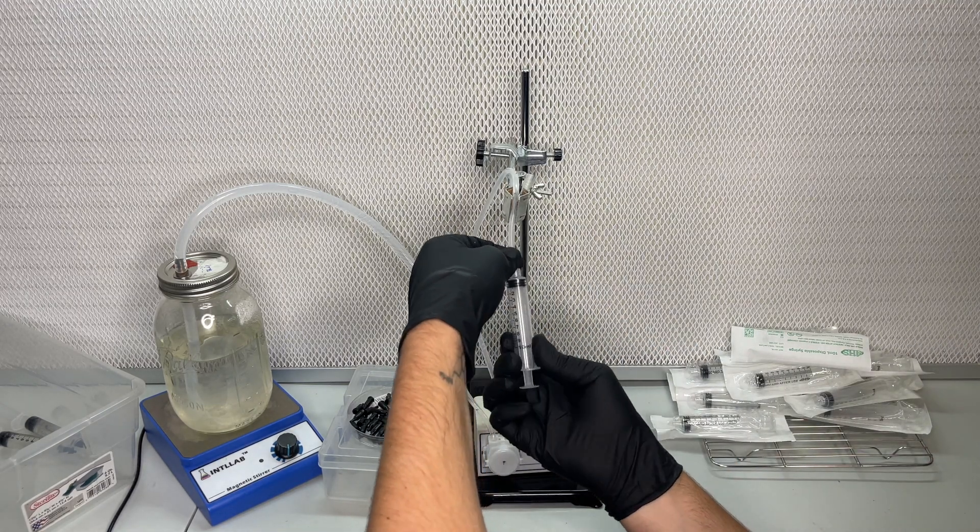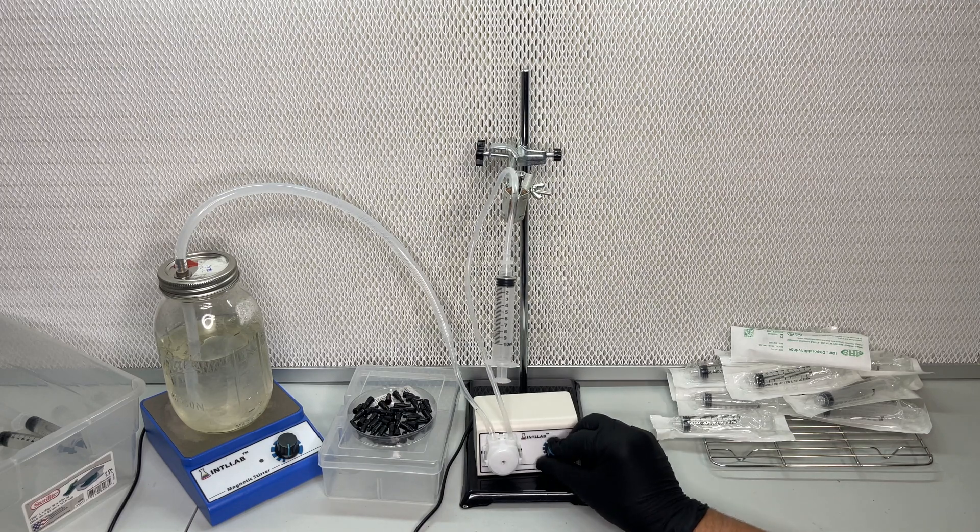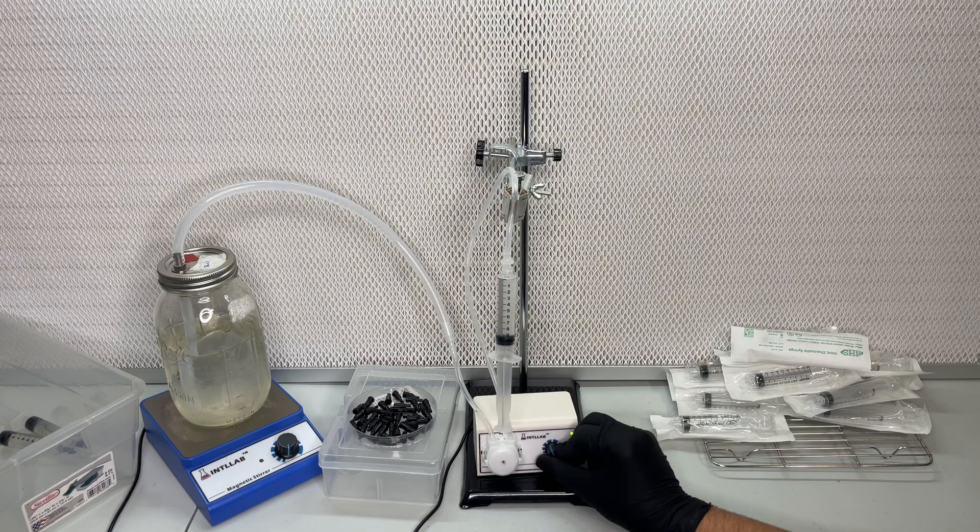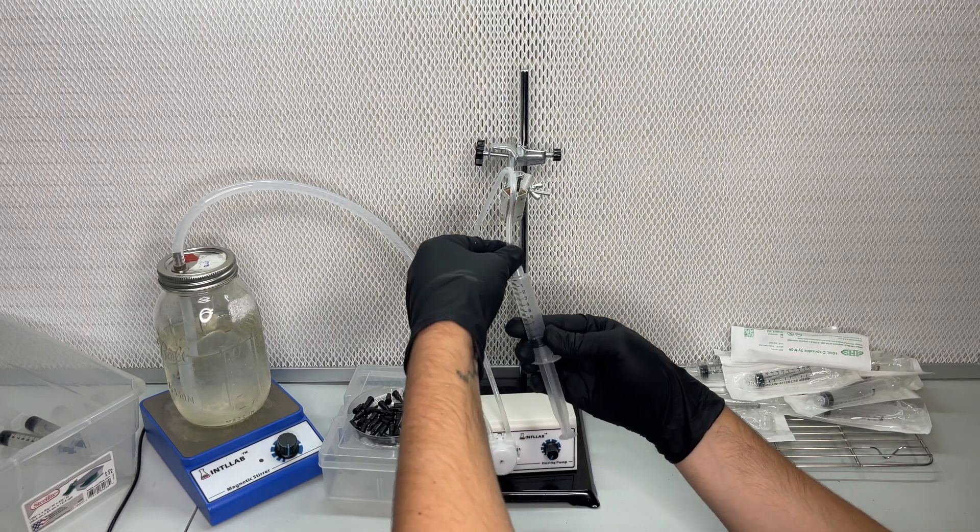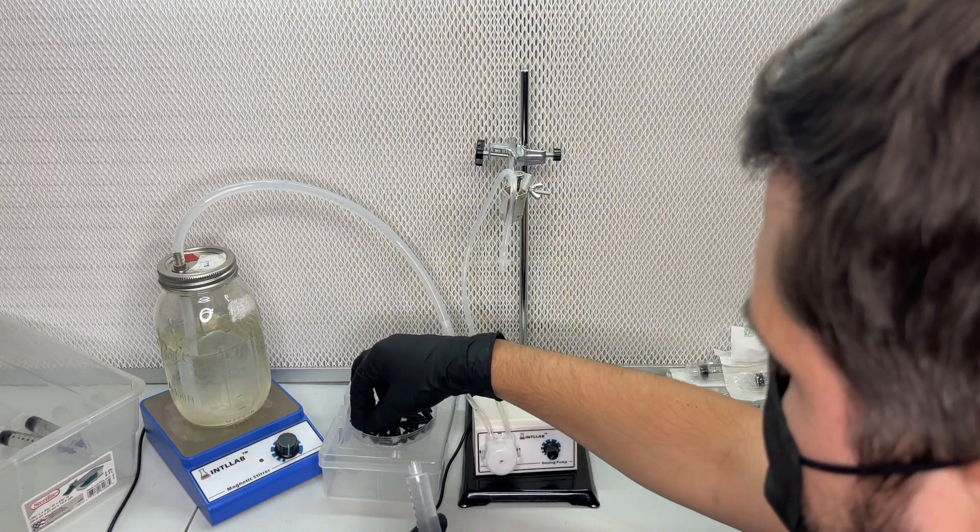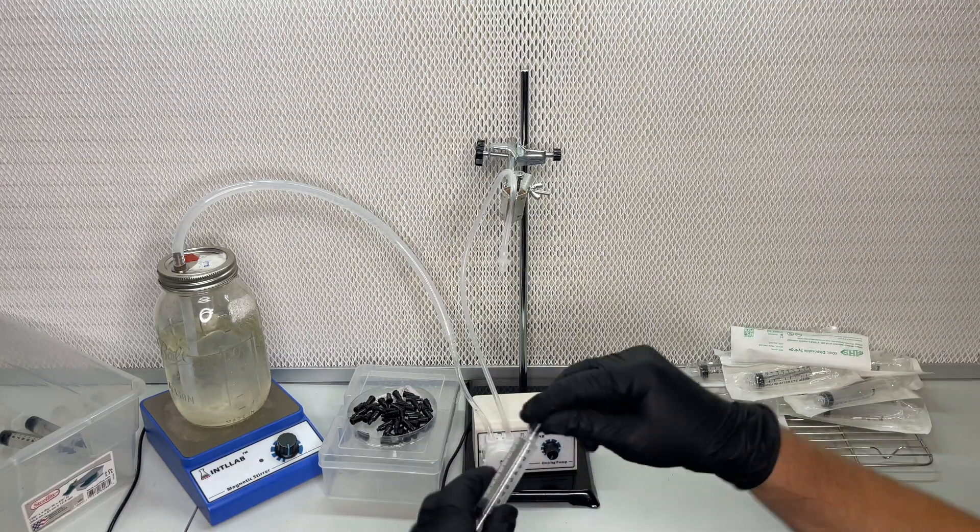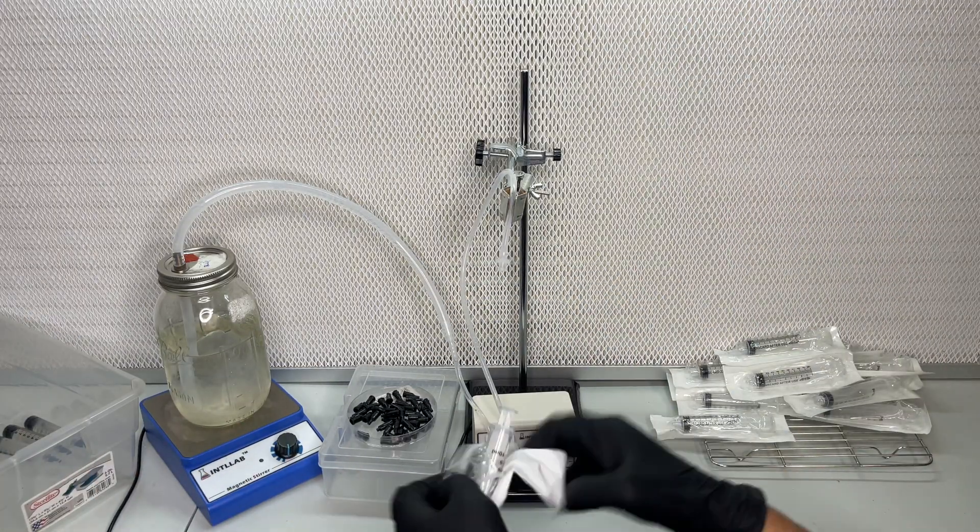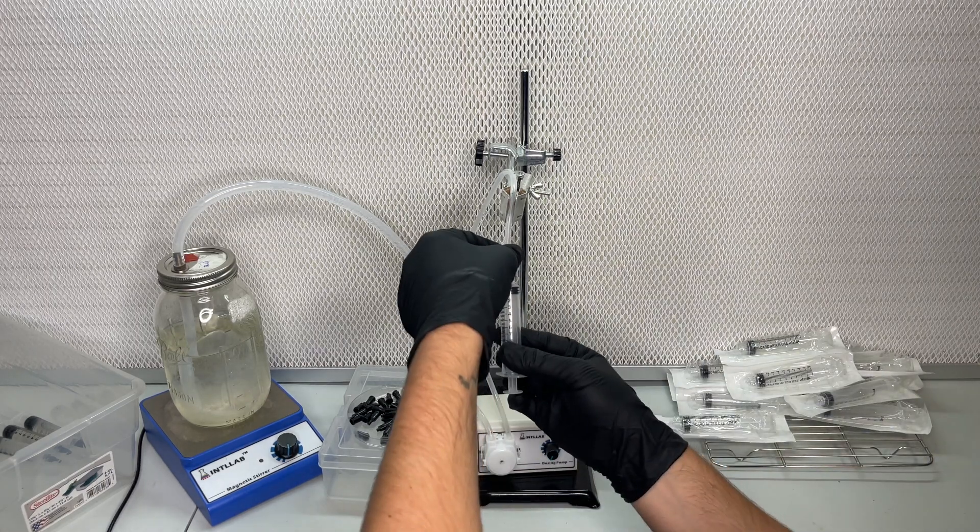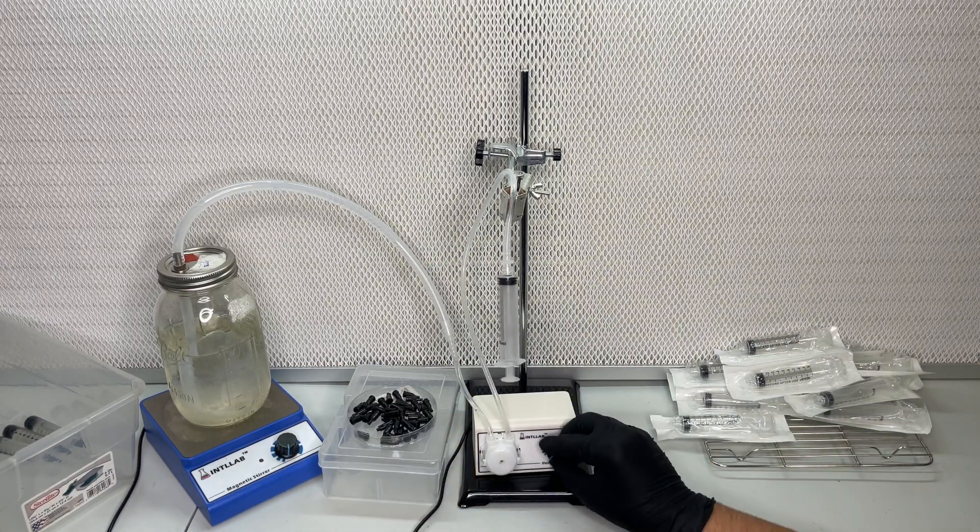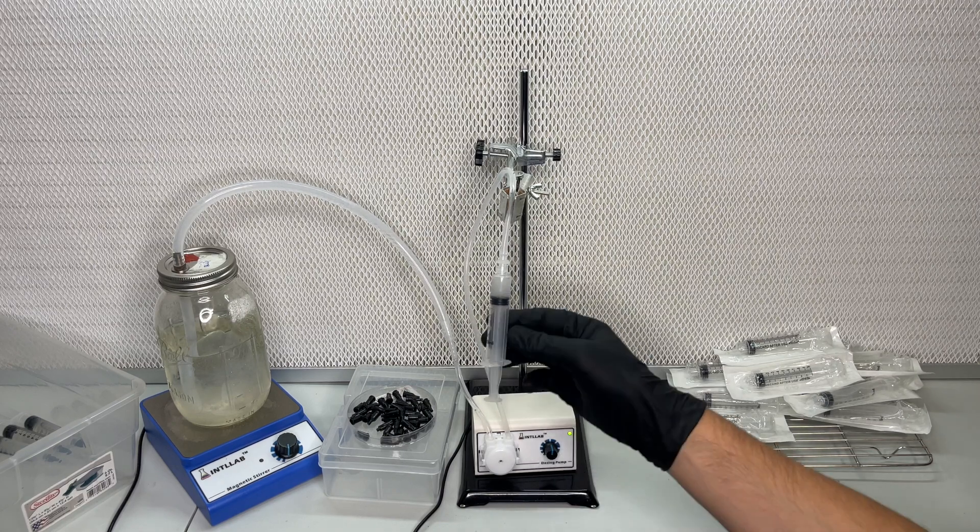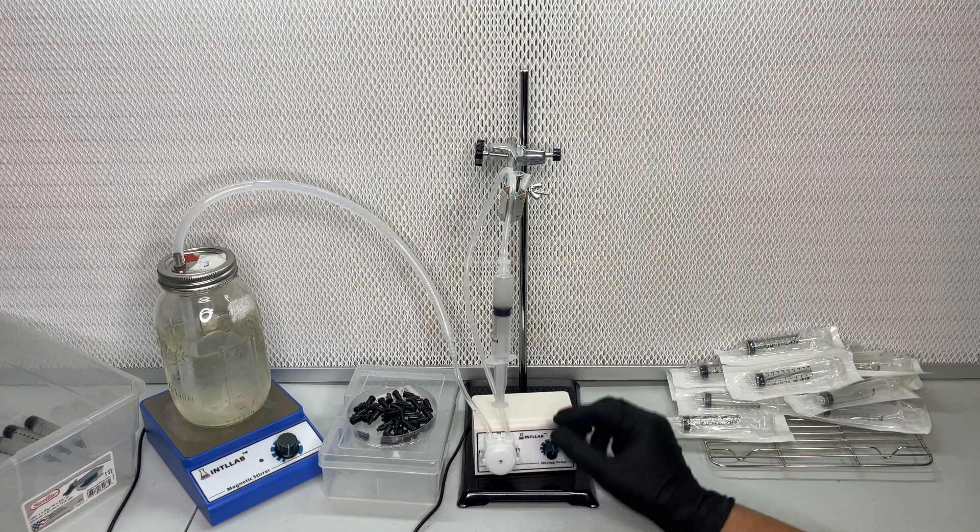With the tubing reaching all the way down to the bottom of the jar you can get every last bit of spore solution or liquid culture. You can use a magnetic stir bar while it's pumping to prevent any clogs in the tubing.